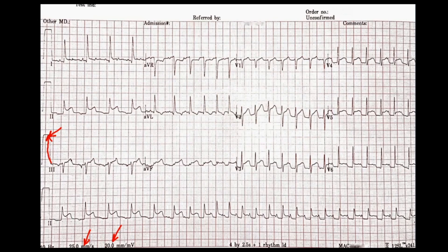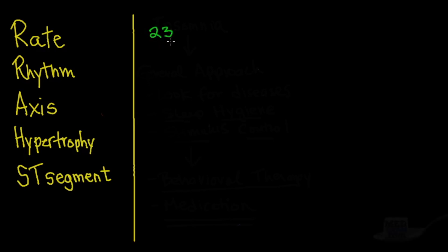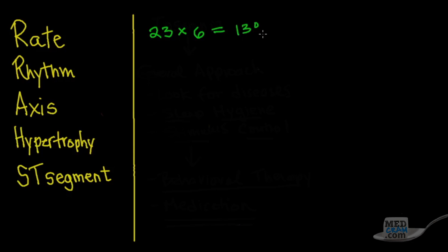We can simply count up the QRS complexes — 1, 2, 3, 4, 5, 6, 7, 8... 21, 22, 23 — and multiply that by 6. So if we have 23 QRS complexes and multiply by 6, since there are six 10-second periods in a minute, we get something close to about 138 beats per minute. That would be the average for the whole EKG.